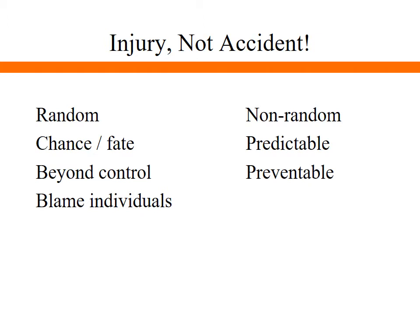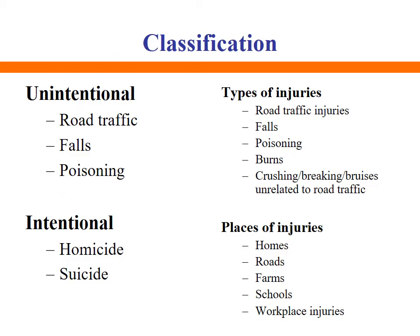Injuries are mainly classified as unintentional and intentional. Unintentional injuries include road traffic injuries, falls, and poisoning. Intentional injuries include homicide, suicide, and violence. Other types include burns, crushing, and bruises — for example, in stone crushing, marble making, and ship breaking industries. Places of injury include the home, roads, farms, schools, and workplaces, giving us domestic, road traffic, farm, school, and occupational injuries.